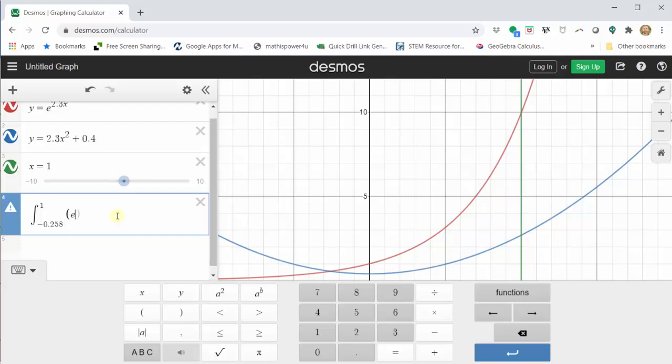Open parenthesis, e raised to the power of 2.3x minus 2.3x squared, minus 0.4, close parenthesis, squared, tab, dx for differential x. And we can see the value is approximately 10.7632, which is the volume of the solid we are looking for.